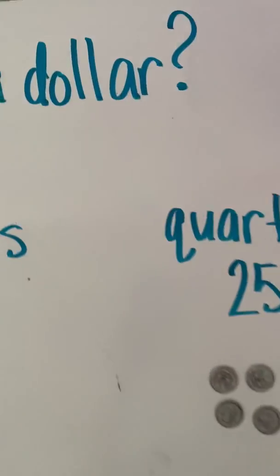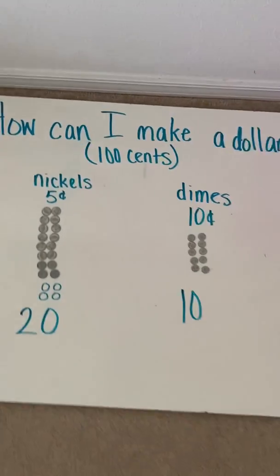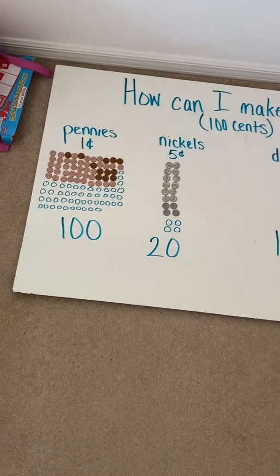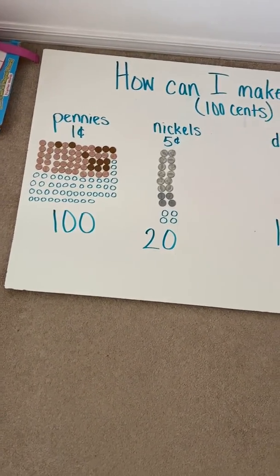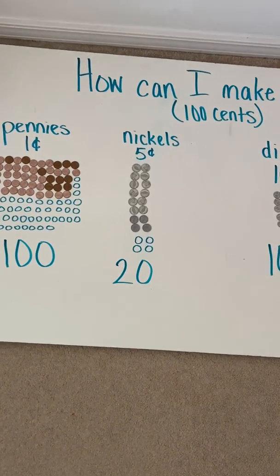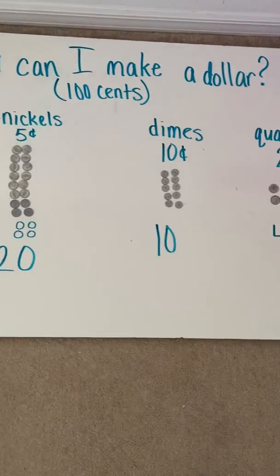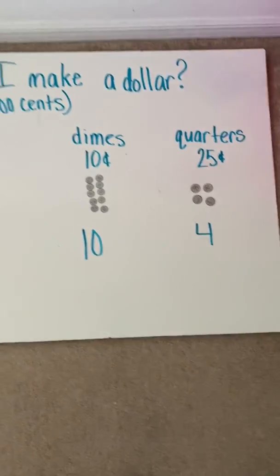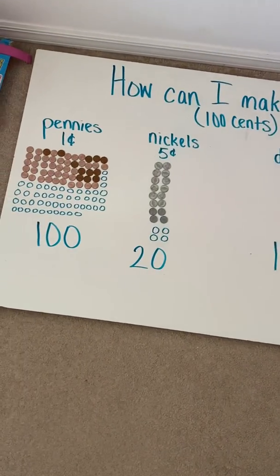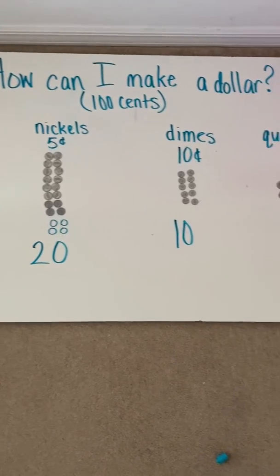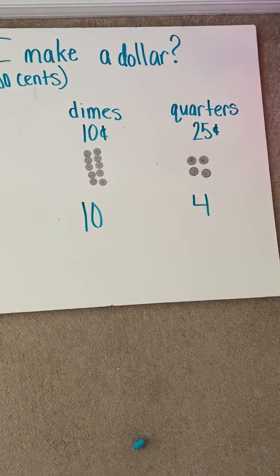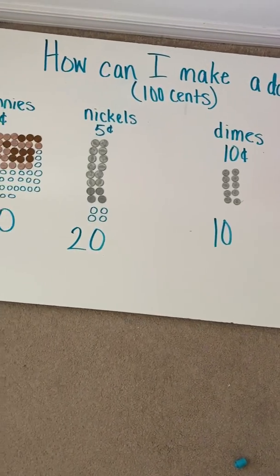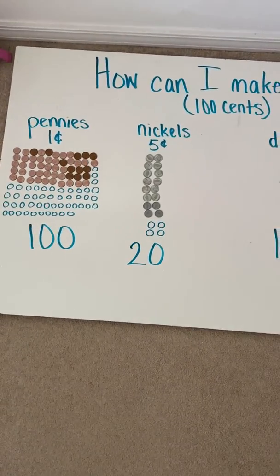Let's go ahead and look at all of our coins. How can I make a dollar? I could use 100 pennies. I could use 20 nickels. 10 dimes. Or four quarters to make a dollar. Boys and girls, which way would you like to make a dollar? Would you rather carry four quarters, 10 dimes, 20 nickels, or 100 pennies?